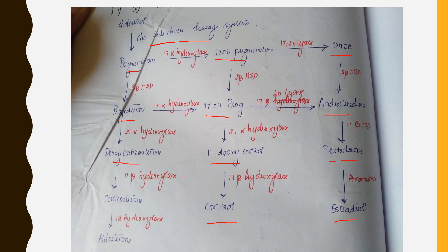If you look at conversions to 17s — pregnenolone to 17-hydroxypregnenolone and progesterone to 17-hydroxyprogesterone — the enzyme is 17-alpha hydroxylase. The conversion of these 17s to sex steroids uses 17,20-lyase. On the vertical pathways you can see 3-beta hydroxysteroid dehydrogenase, 21-alpha hydroxylase, and 11-beta hydroxylase — 3, 21, and 11.